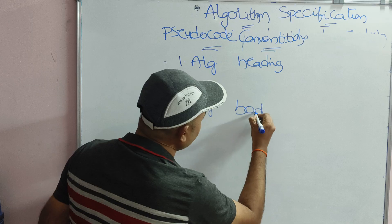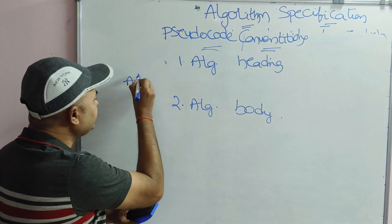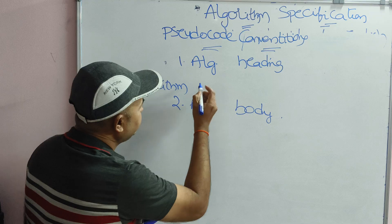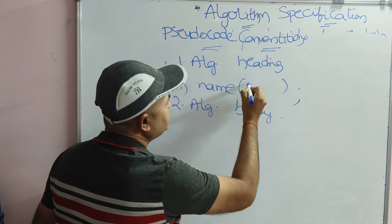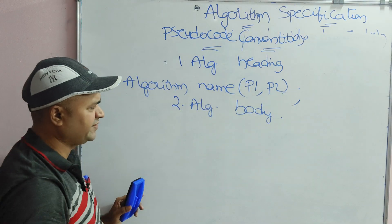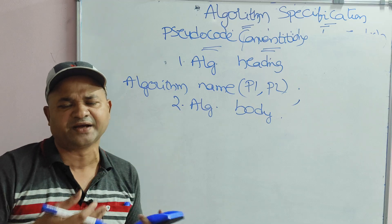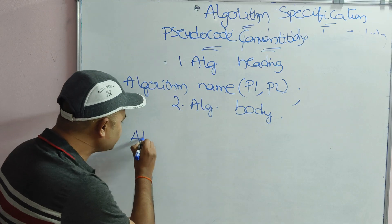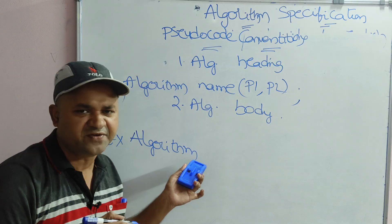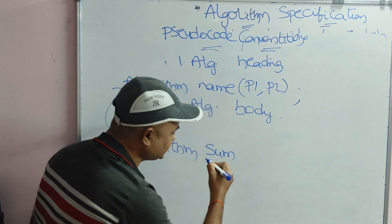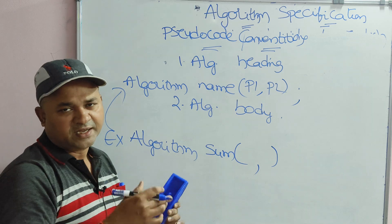The algorithm heading starts with the keyword 'algorithm', followed by the name of the algorithm and parameters specified within parentheses separated by commas, ending with a semicolon. For example, for an algorithm to calculate the sum of array elements: 'Algorithm Sum(a, n)' — where a is the array and n is the size. Data type and variable declaration are not necessary in an algorithm heading. Also, the algorithm heading never ends with a semicolon, just like a function.